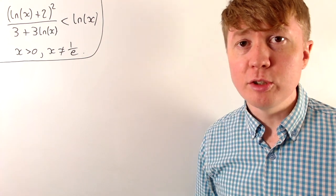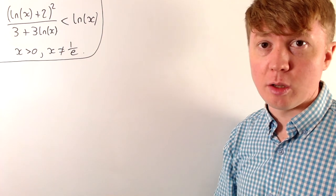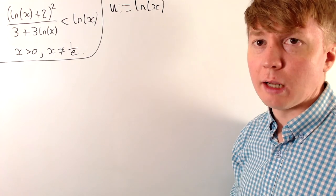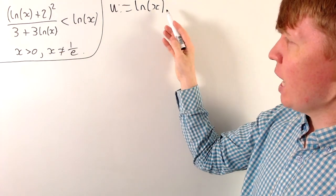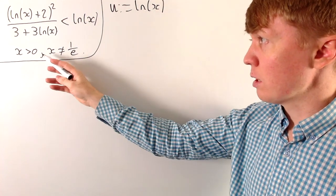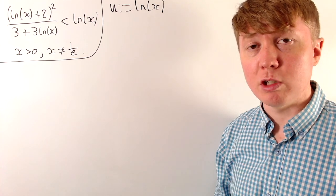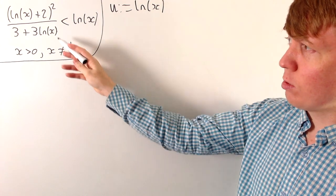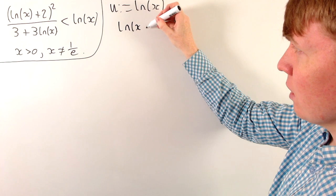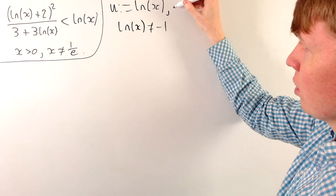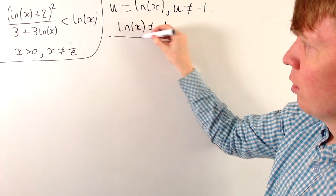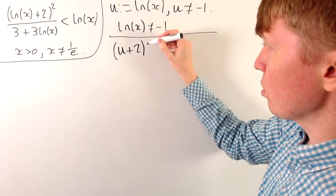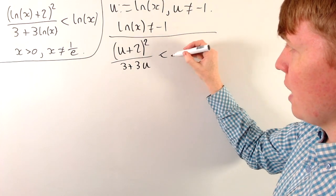To make things more manageable, we replace all ln x terms with a new variable u, defining u as ln x. Since x must be positive, u can be any real number; and since x ≠ 1/e, we need u ≠ -1. Substituting in, we get the inequality: (u+2) all squared divided by (3 + 3u) is less than u.